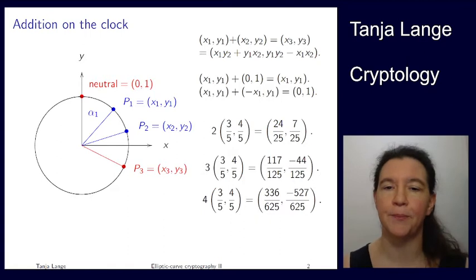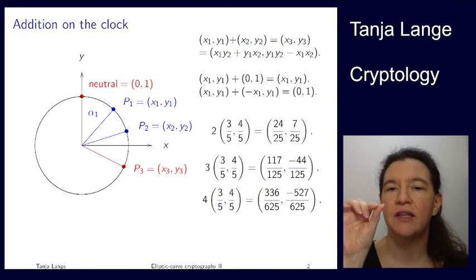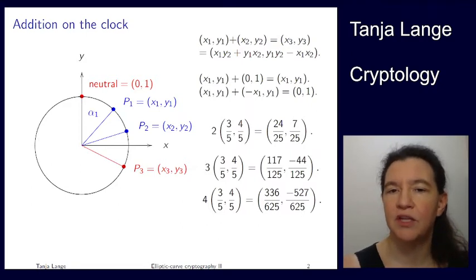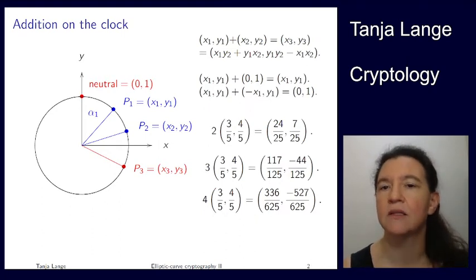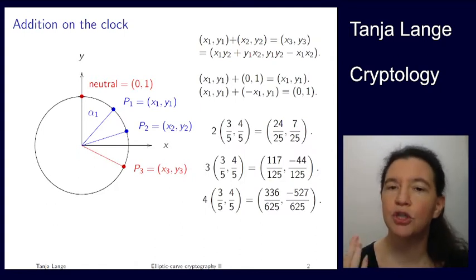If you're adding a point (x1, y1) to another point (x2, y2), then you're getting a point at the coordinates that are listed there. So the neutral element is (0, 1) and we can verify that if y2 is 1 and x2 is 0, then it's x1 times 1 plus y1 times 0, so it's just x1. Over here it's y1 times 1 minus x1 times 0.